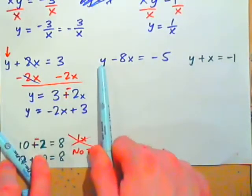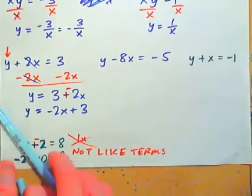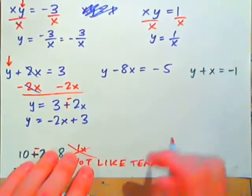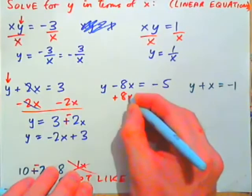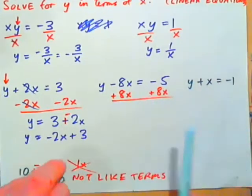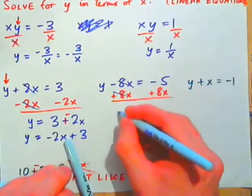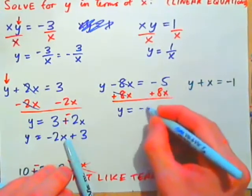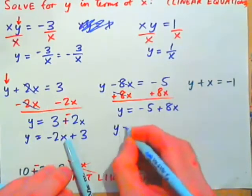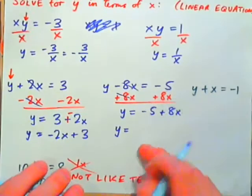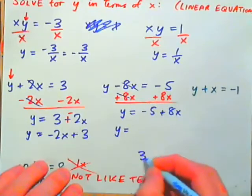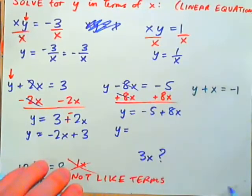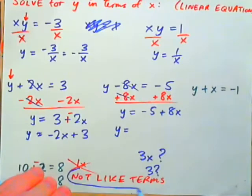Let's look at Y minus 8X equals negative 5. 8X is being subtracted from Y, so to get Y by itself, add 8X to both sides. Negative 8X plus 8X is zero, so we get Y equals negative 5 plus 8X. Remember: negative 5 plus 8X cannot be combined — they are not like terms.